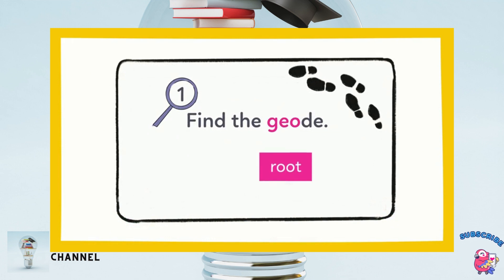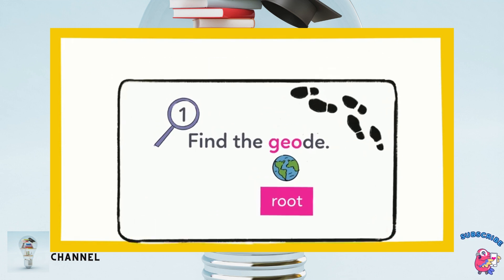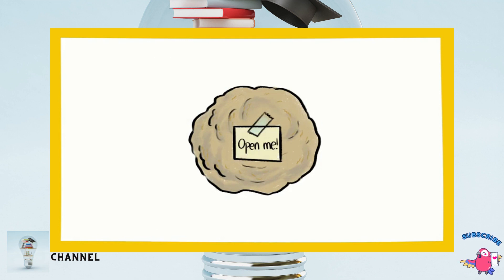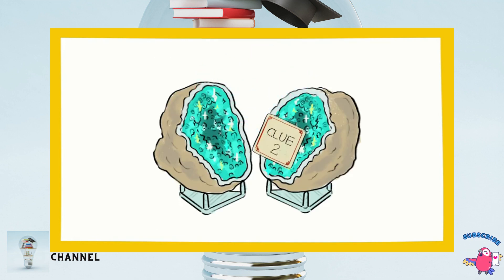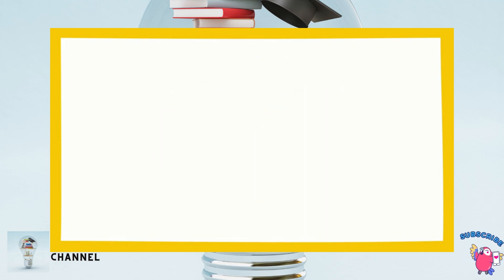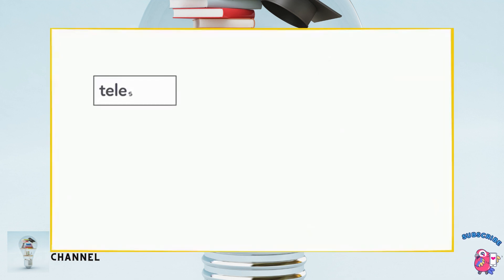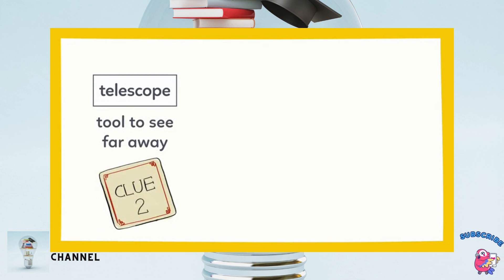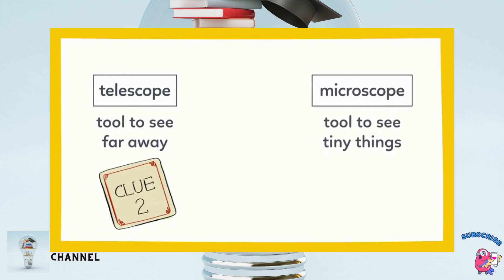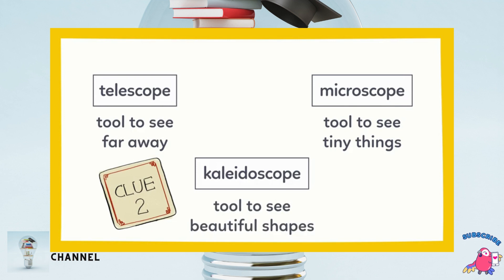Since geo is a root that means earth, that rock from the earth must be the geode — and it says open me! While we read the next clue, let's practice finding the definitions of roots. The clue in the geode says: look for the periscope. The hints are: telescope — tool to see far away; microscope — tool to see tiny things; kaleidoscope — tool to see beautiful shapes.